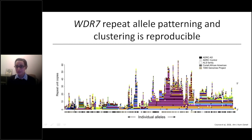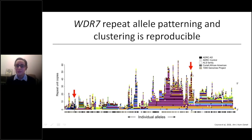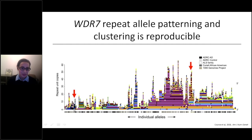In fact, we recognize some of the same clusters from the previous graph, and we also see some new clusters appear. For example, one tower here is specific to individuals of Chinese descent, and another cluster is specific to individuals of African ancestry. So there is some population specificity.